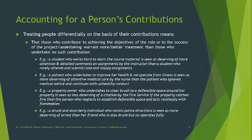A property owner who undertakes to clear brush to a defensible space around her property is seen as less deserving of a citation, where citations are issued by the county or by the fire service, if the property catches fire, than a person who neglects to establish defensible space or acts recklessly with flammables in dry areas. And in the area of policing, a drunk and disorderly individual who resists police directions is properly seen as more deserving of arrest than her friend who is also drunk but less disorderly and cooperates fully with the police.